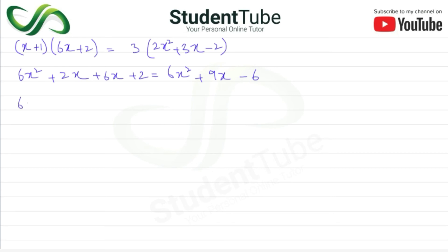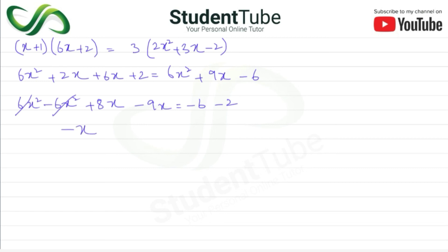Now 6x² cancels from both sides. On the left we have +4x + 6x = 8x. Right side has −9x. So 8x − 9x = −x, and the constants: 4 moves to right as −4, and −6 is on the right: −x = −6 − (−4) = minus minus cancel, so x = 8. Answer is x = 8.